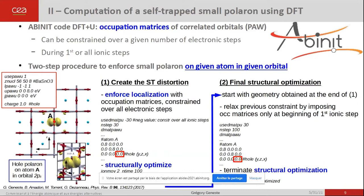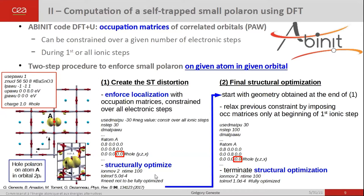This can be done by the following two-step procedure, illustrated here for an oxygen-type hole polaron in an oxide. First, you create a self-trapping distortion by enforcing the localization on a given atom and orbital — here atom A and orbital PX — and structurally optimizing the system by constraining the occupation matrices over all electronic and ionic steps. Then, starting from the obtained geometry, you release the constraint of fixed occupation matrix, imposing it only at the first ionic step, and terminate the structural optimization. After that, you normally obtain your self-trapped polaron on the atom and in the orbital you have chosen, provided that this self-trapped polaron is stable.